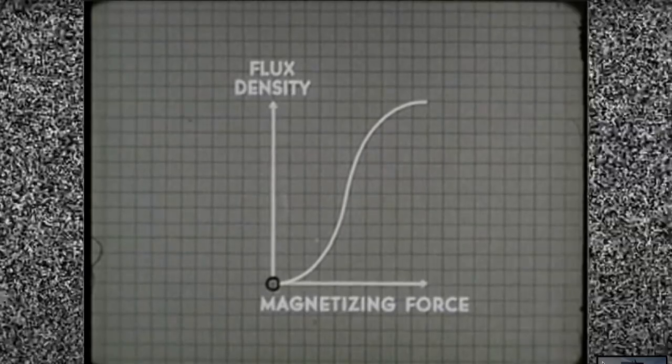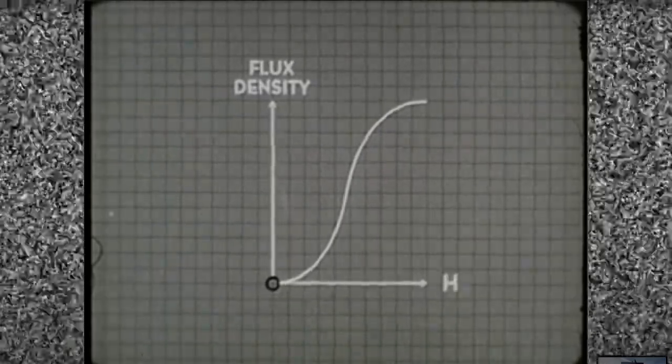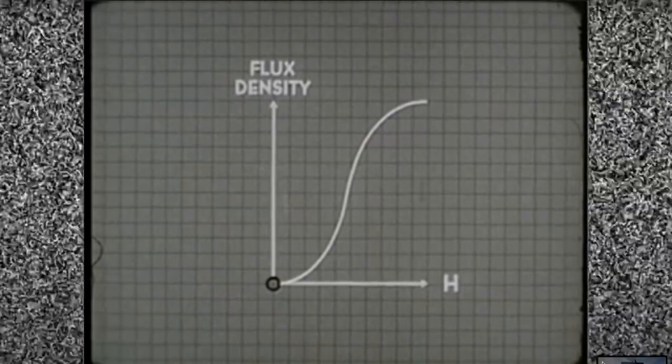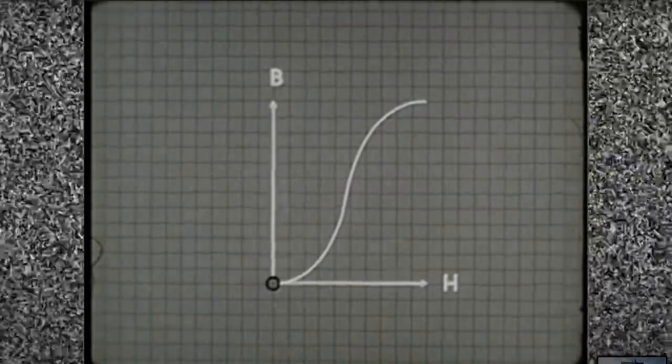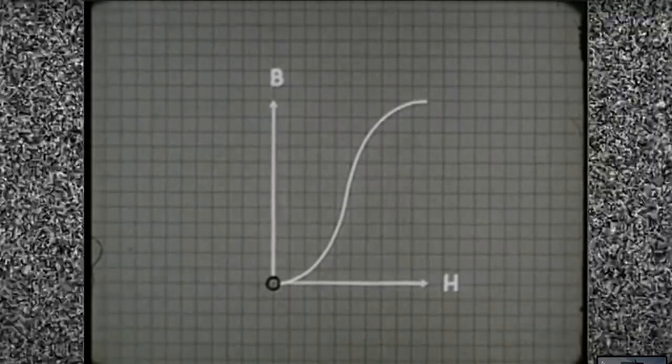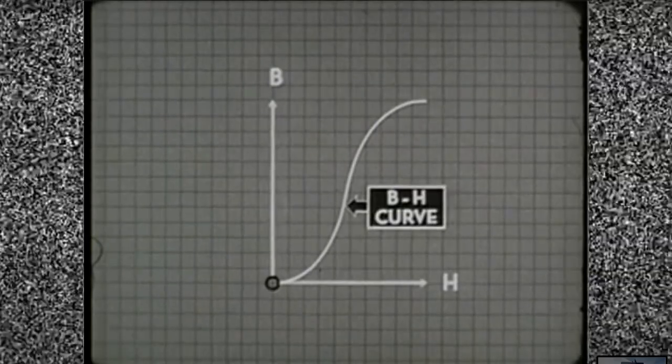The symbol for magnetizing force is the letter H. The symbol for flux density is the letter B. The relationship between magnetizing force and flux density for any given core material is represented by its BH curve.